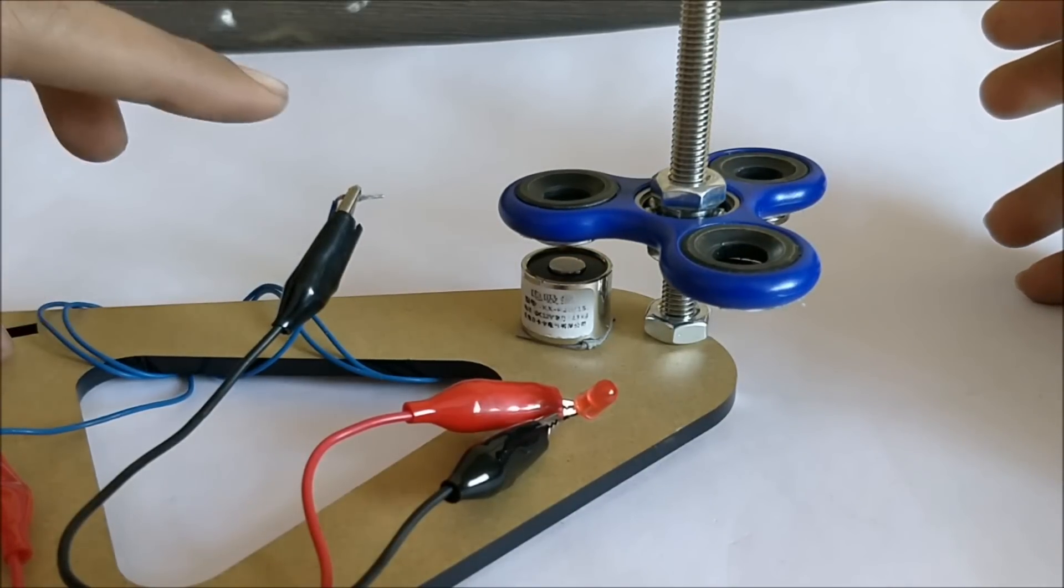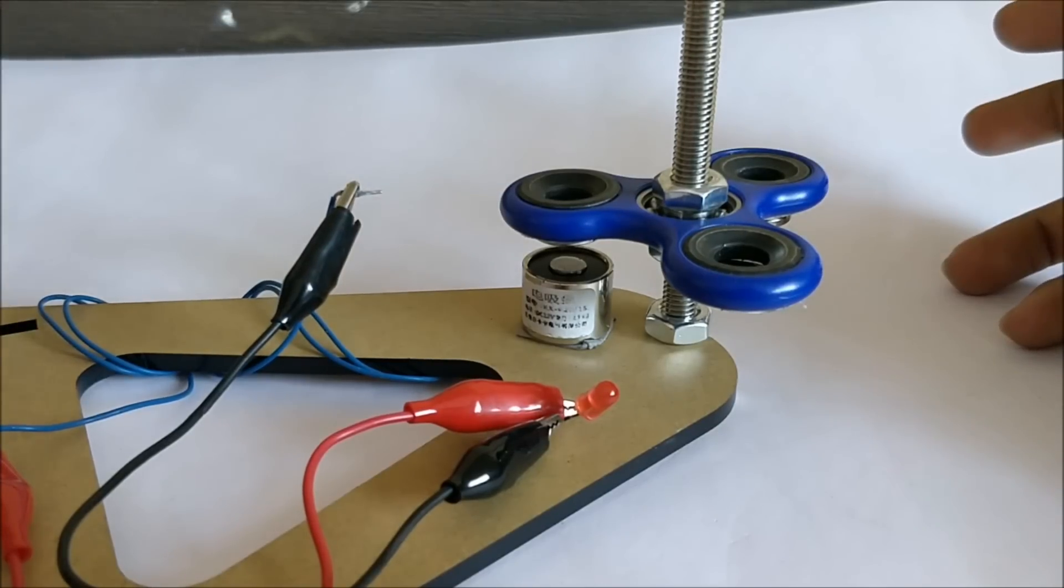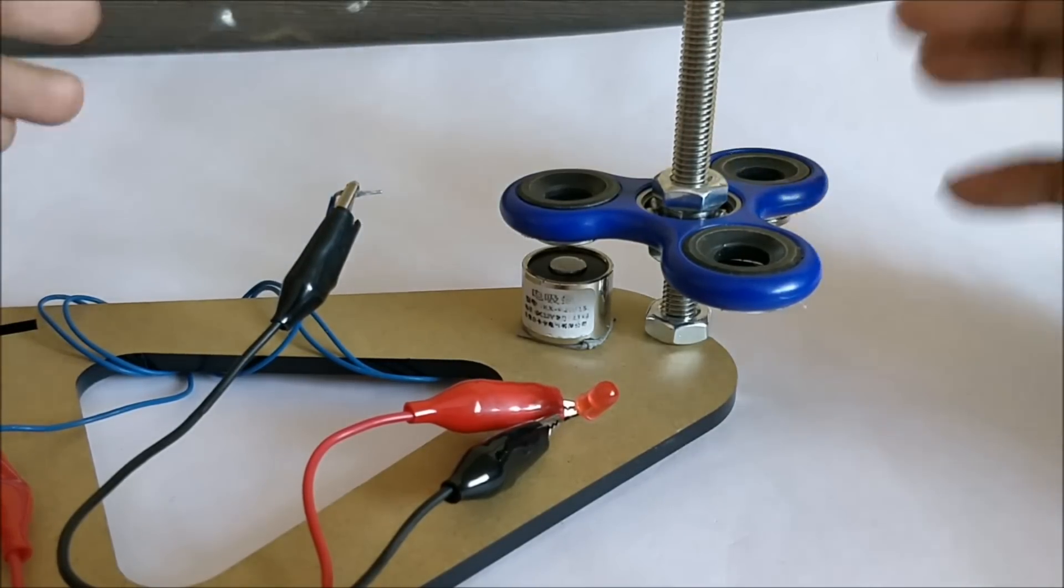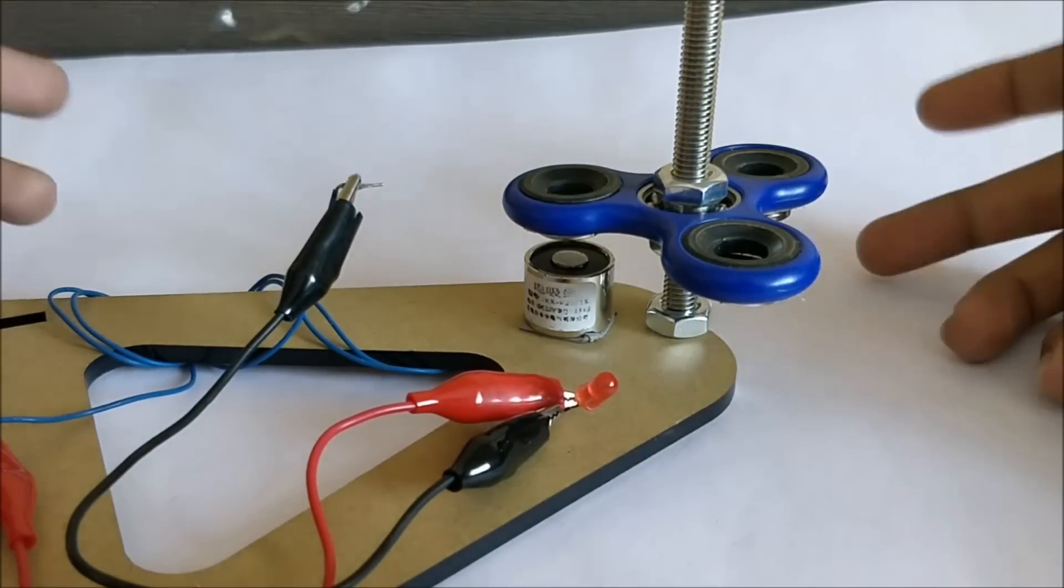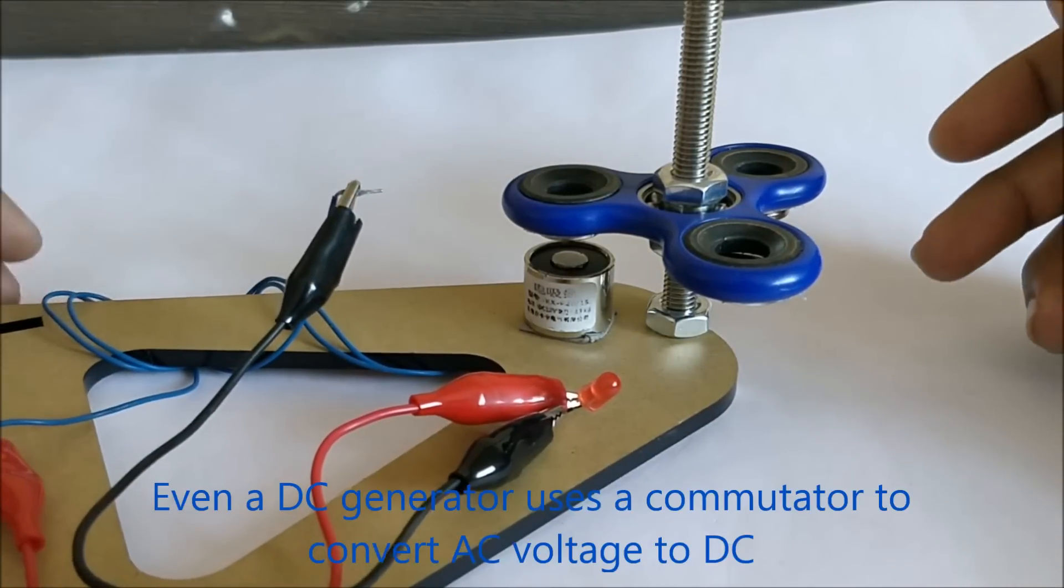So every generator including this small do-it-yourself thing is producing only AC voltage. Even in a DC generator we use something called a commutator to produce AC voltage.